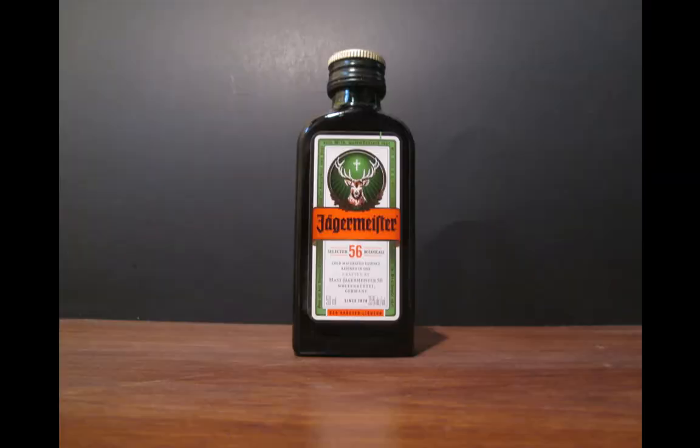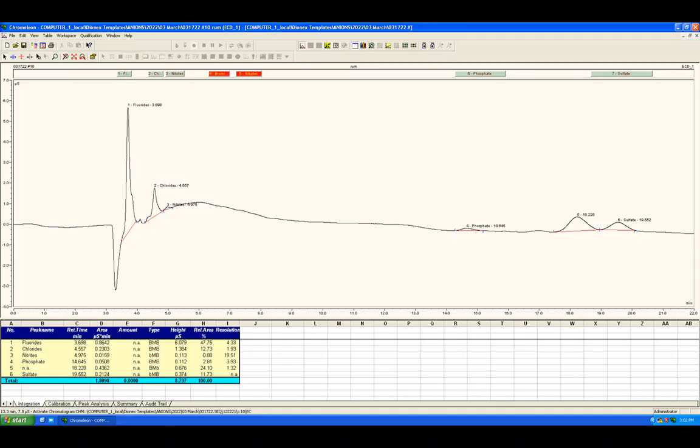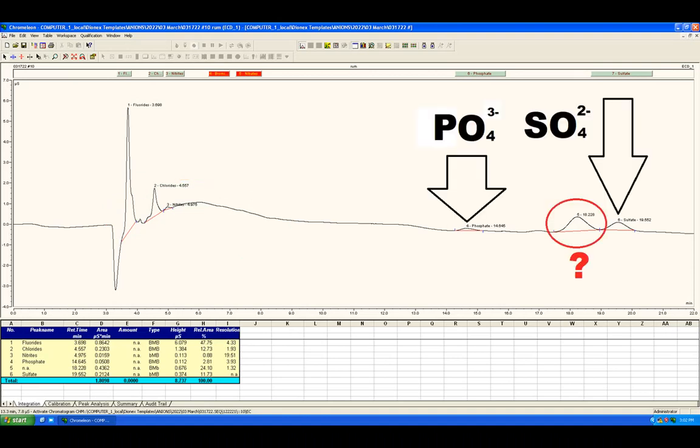First on the list is Jagermeister, which is high in organics and not much else. But rum was injected after Jagermeister and this hump is probably a leftover from Jagermeister, possibly a benzoate or some such heavy organic molecule. Notice the sulfate and the like in rum there.